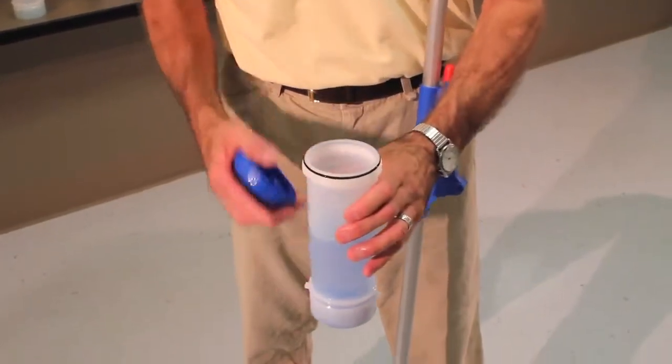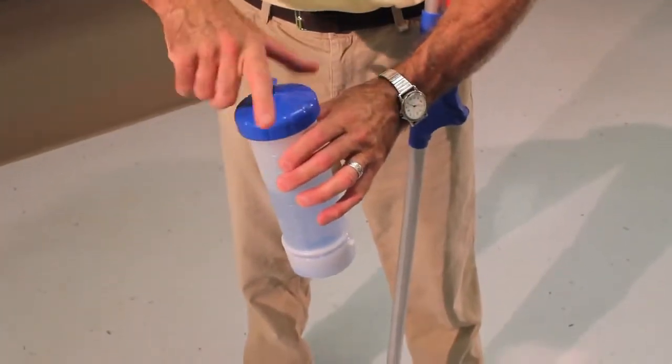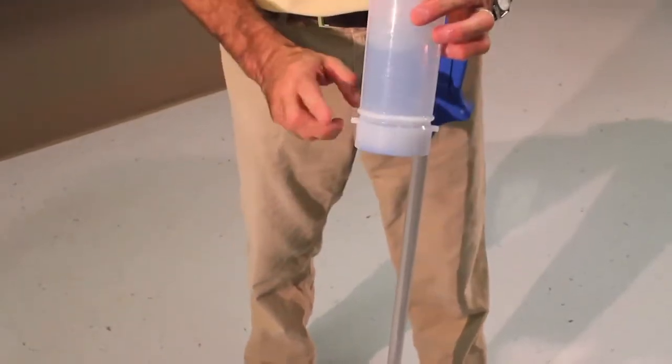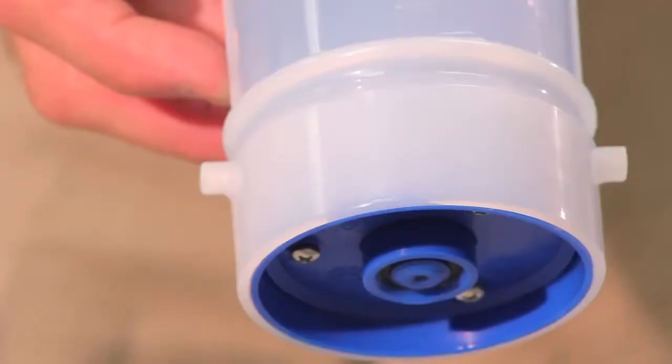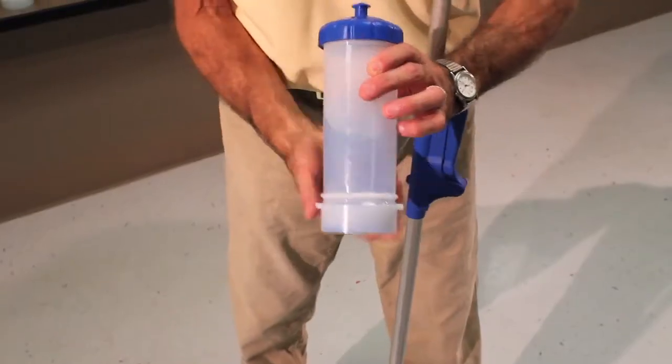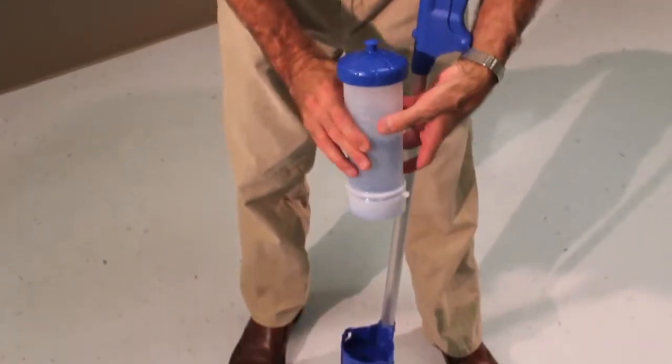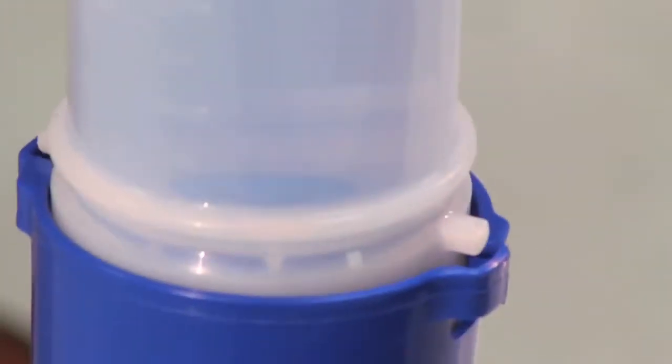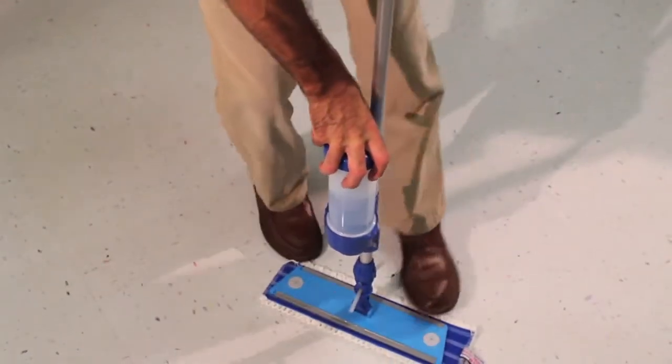At the beginning of the shift, gather the mops to be used and fill the bottles with the appropriate cleaner. To engage the bottle, place over the support holder, lining up the tabs at the bottom of the bottle with the openings in the bottle holder. Press down and twist to the left to engage.